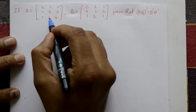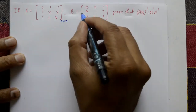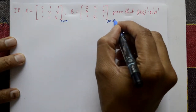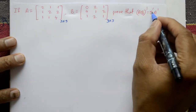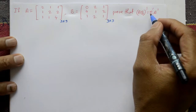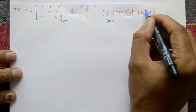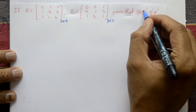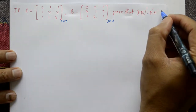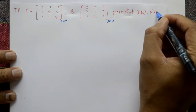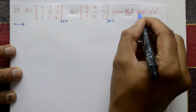Matrix A is given, order is 3×3. Matrix B is also order 3×3. Prove that (AB)' is equal to B'A'. The answer should be the same. First, multiply A into B, then take the transpose — that is (AB)'. Then compute B' times A'. You should get the same matrix. Let us see the solution.